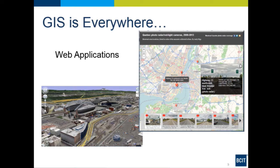This is what we call a story map — maps are becoming more interactive. For example, this is a story map called Quebec Photo Radar, which shows red light cameras. It has a map as a base, with the location of all the red light cameras in the Montreal area shown as little red symbols. Each symbol is related to a picture and a video. So GIS is really doing a lot more than just traditional maps.